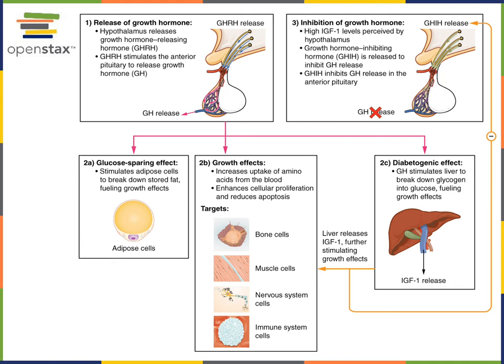Growth hormone will stimulate the uptake of amino acids from the blood — the building block molecules used to build proteins. Growth hormone also stimulates cellular proliferation and reduces apoptosis: cellular proliferation is cell division to make more cells, and apoptosis is programmed cell death, so growth hormone stimulates production of more cells to increase tissue growth. This is especially important at the epiphyseal growth plate, where it stimulates the elongation of bones.